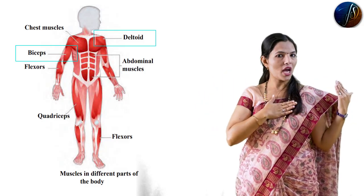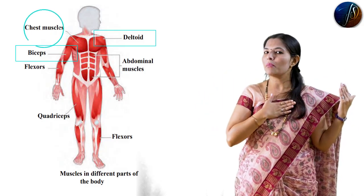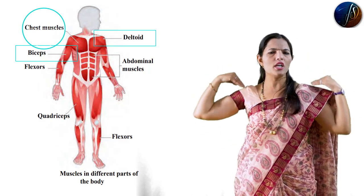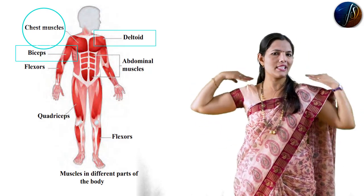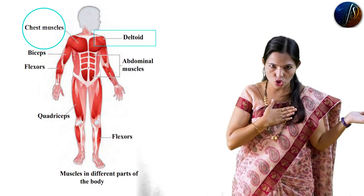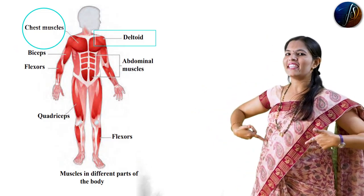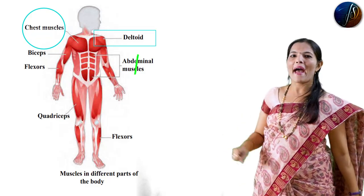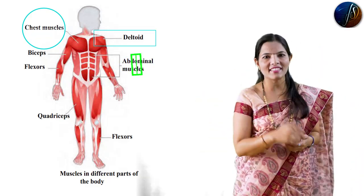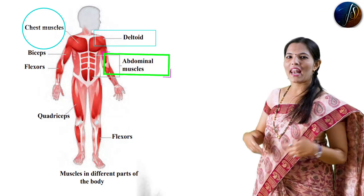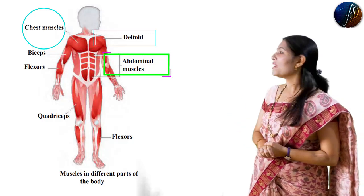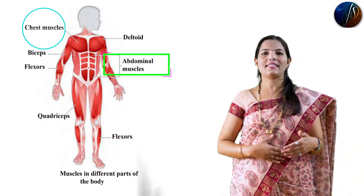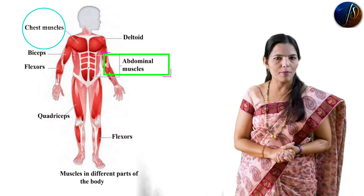Then, the chest muscle - chest muscles are there. This is your deltoid for the shoulder, and this is your chest muscle. Then, what you call a 6-pack - it is written in your book as abs, and it is called abdominal muscles. Our stomach muscles are called abdominal muscles.